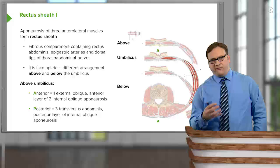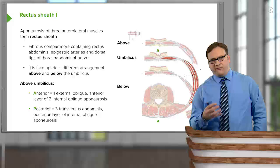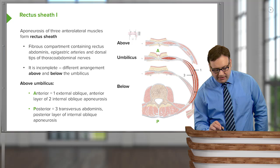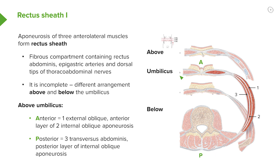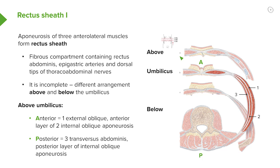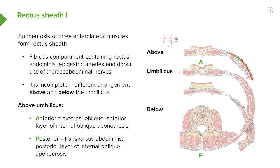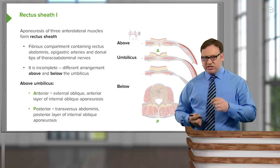The formation of the rectus sheath differs above and below the umbilicus. This is the level of the umbilicus here. So if you're above the umbilicus or below the umbilicus, this arrangement is going to be different. If we are above the umbilicus, we're looking at the details of the rectus sheath above the umbilicus. Imagine this line here coming from the posterior aspect — taken higher up above the umbilicus — and we're looking at the formation of the rectus sheath.